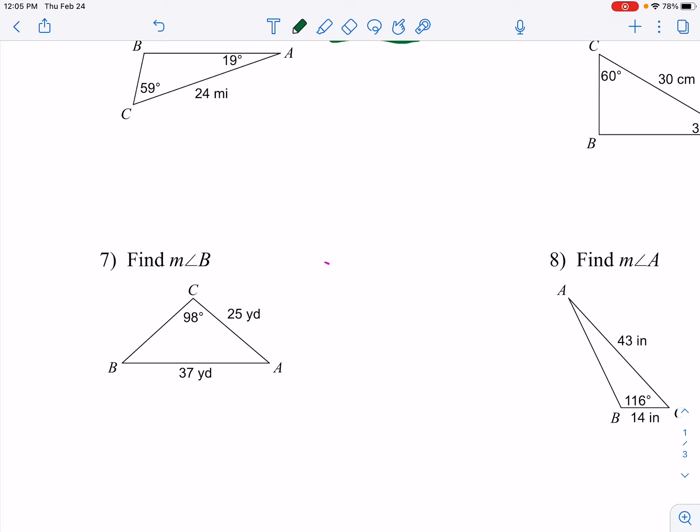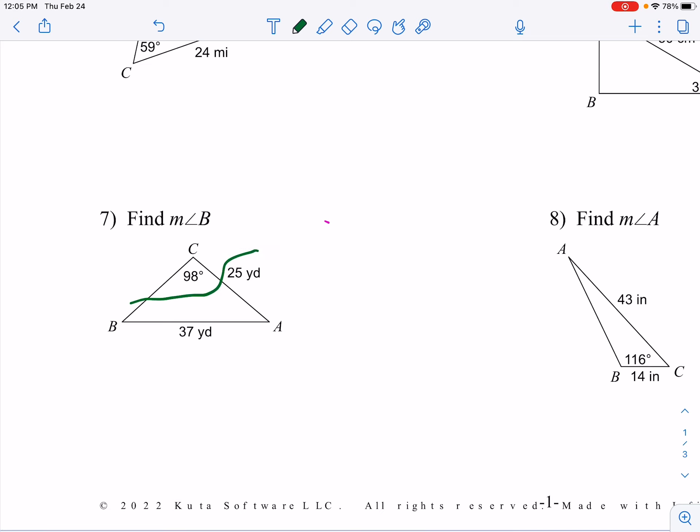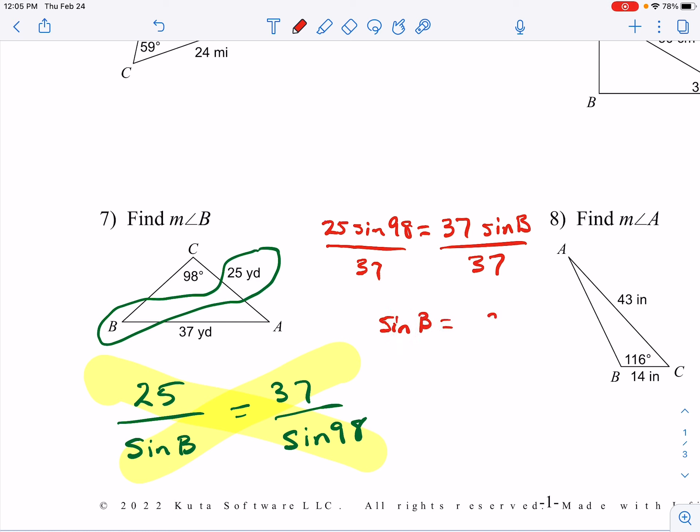Let's do one where you find an angle. So for this one, it's going to be a little different. We're looking for angle B, and it's across from the 25 yards. We still cross-multiply. So 25 times the sine of 98 is equal to 37 sine B. We divide by 37.